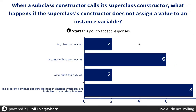Syntax error can't occur because it's not a syntax problem. Syntax means something's wrong with the way we've built our command. In this case, there's nothing wrong with the command — I'm making the super call. What happens if the superclass constructor does not assign a value to an instance variable? An instance variable is a variable with 'this' in front of it. A is wrong. B — a compile time error occurs — that's also wrong, because there's no compile time error. It's not an error to not assign a value to an instance variable.